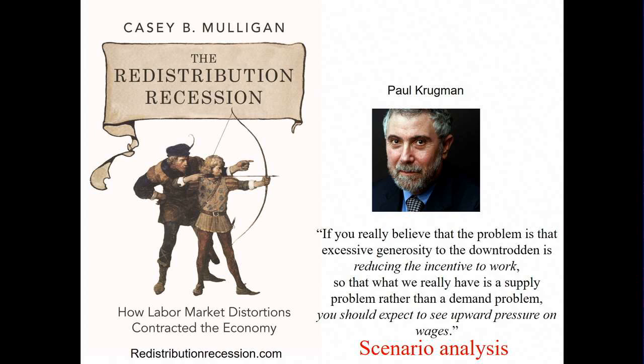Let me show an application from economics relating to a debate about the recession. A recession, by definition, is a time when the amount of labor goes down. The great question is why did that happen? I wrote a book saying most of the reason why labor went down — not all, but most — is because of new federal policies that were rewarding low incomes and rewarding not working. That's the primary reason I argue we had low incomes and less work.